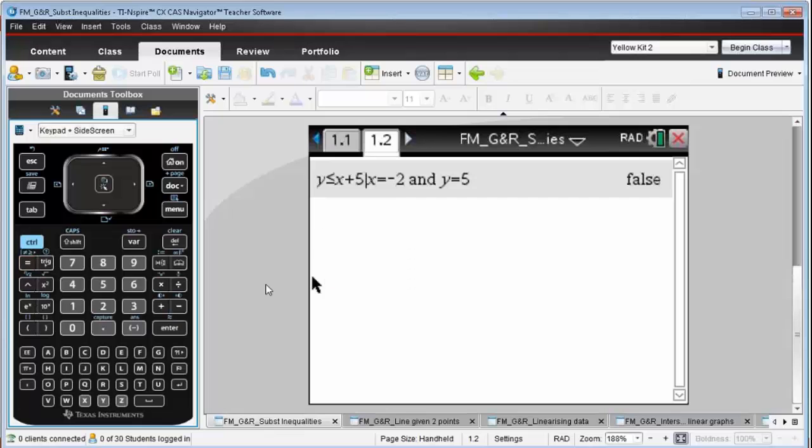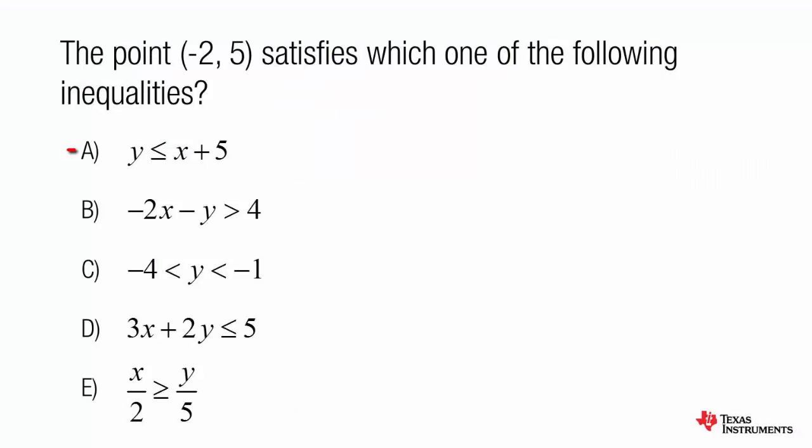I'm going to press escape to get out of that because I don't want to enter that. But you can see that by then subbing those points in, you get false. So that says that option A is not correct.